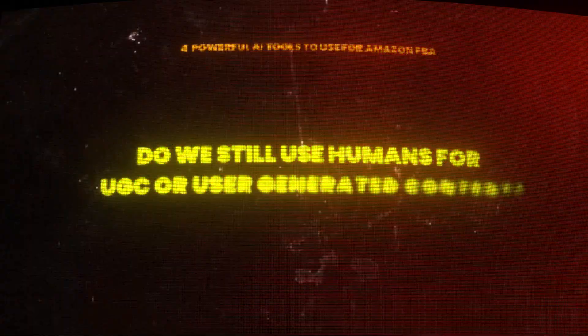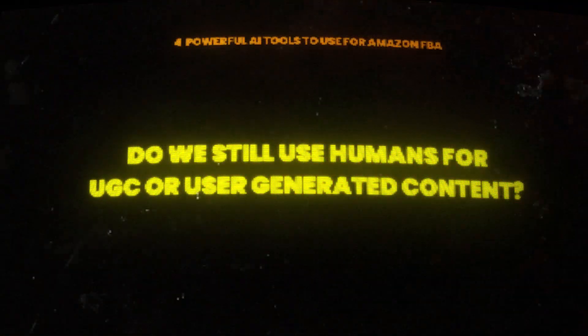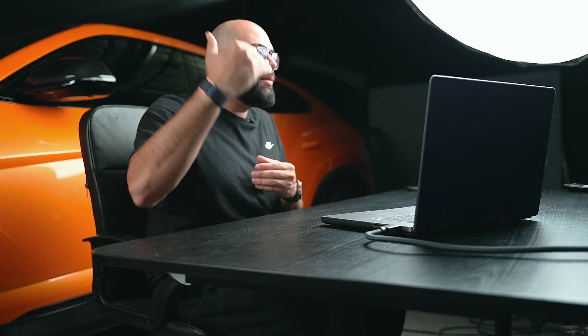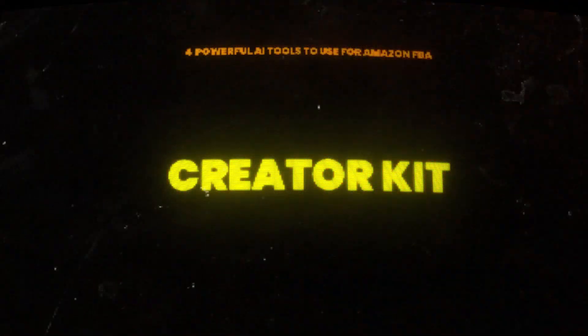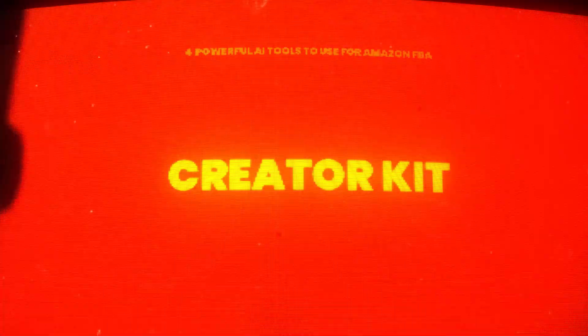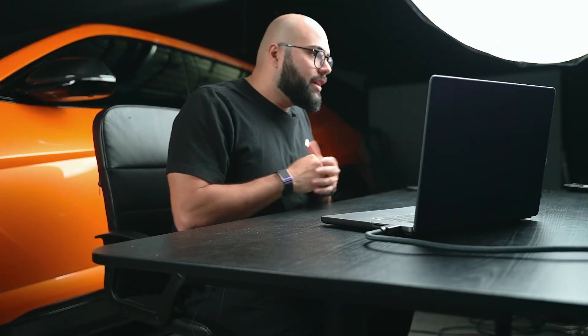Full disclosure — we still use humans for UGC, or user-generated content. However, for a lot of you starting out or already up and running, we can test scripts and get content to the marketplace a lot faster with deepfakes and AI tools. The fourth AI tool is Creator Kit, at creatorkit.com — links will be in the description for all of these.